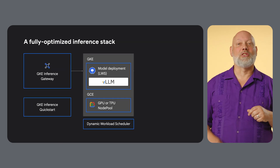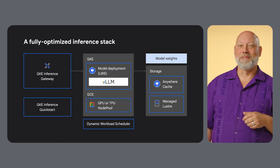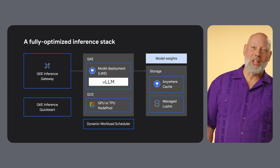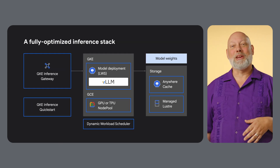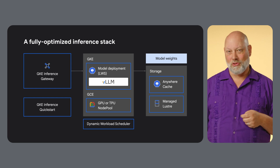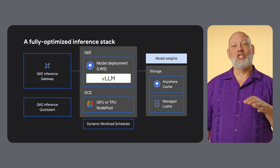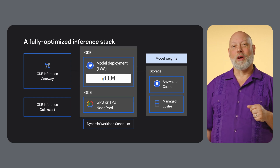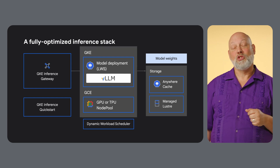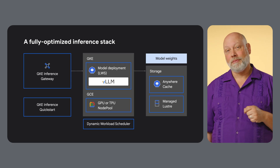The implementation of all these ideas — maximizing reliability, scaling, performance, and intelligent compute scheduling — are captured in our GKE Inference Reference Architecture, which you can use now. This architecture provides a production-ready blueprint for deploying AI inference workloads on Google Kubernetes Engine.